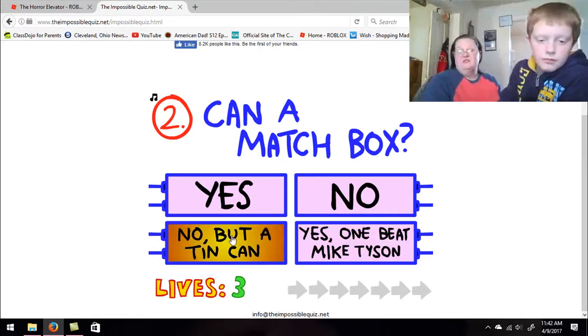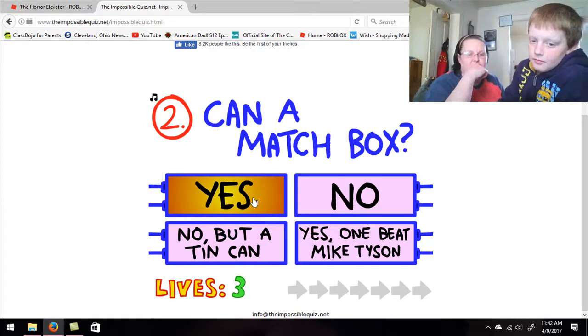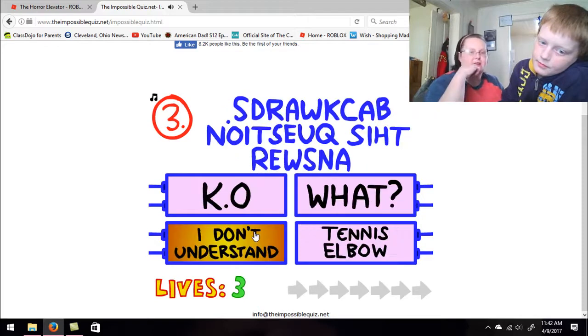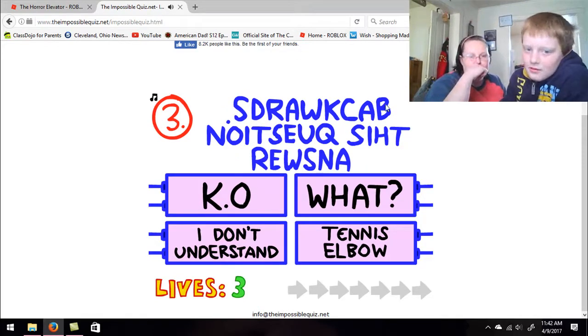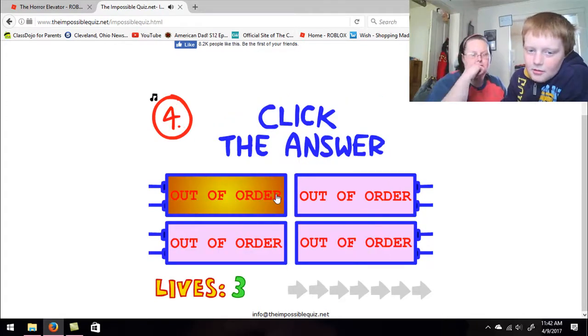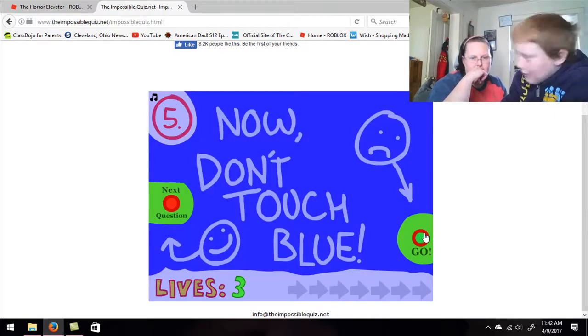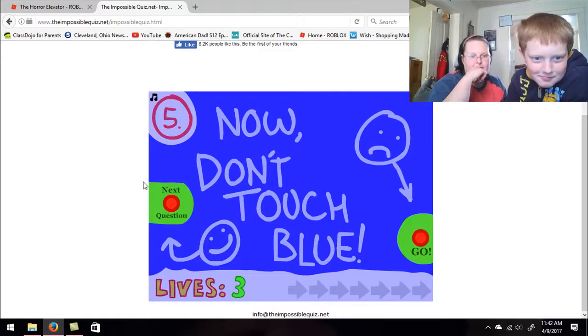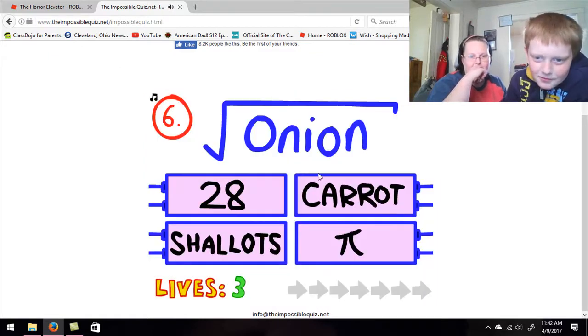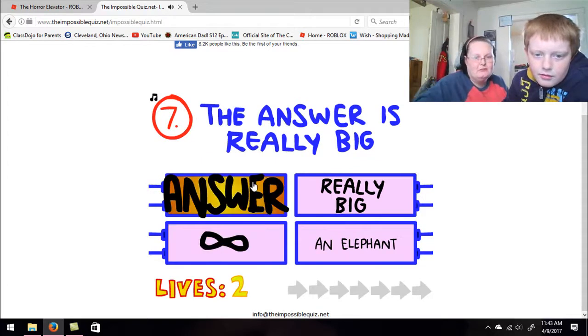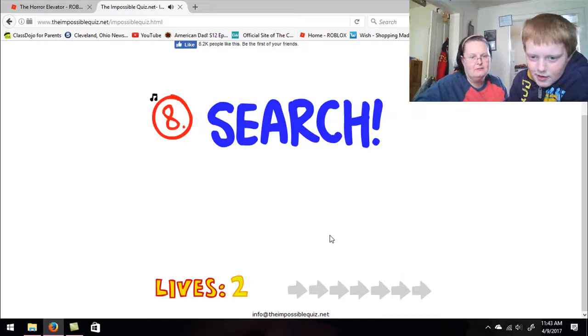I don't know either. Can a matchbox? Yes. One beat Mike Tyson. No but a tin can. Answer this question backwards. Click the answer, put the mouse over here, don't touch the blue. Go around that way. Onion, shallots. The answer is really big. An elephant. Search.